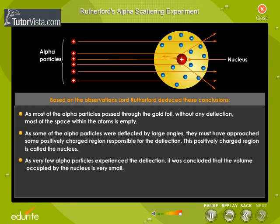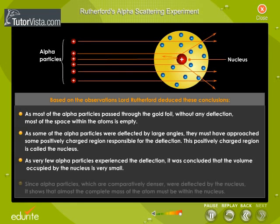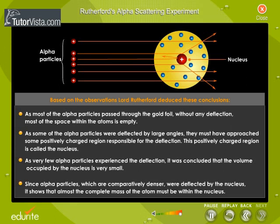As very few alpha particles experienced the deflection, it was concluded that the volume occupied by the nucleus is very small. Since alpha particles, which are comparatively denser, were deflected by the nucleus, it shows that almost the complete mass of the atom must be within the nucleus.